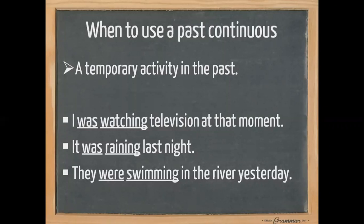Next one: it was raining last night. It was raining last night but then it stopped raining. It is not raining now. And for the last one, they were swimming in the river yesterday. They were swimming in the river yesterday but today they are not swimming. As you can see, we were at a specific time in the past. So the past continuous tense refers to something that was going on in the past at a specific time, then it stopped.